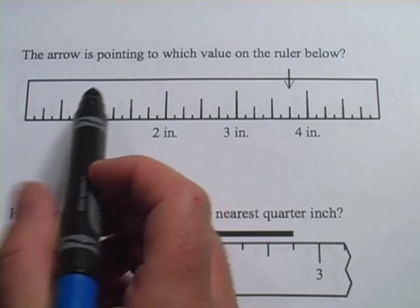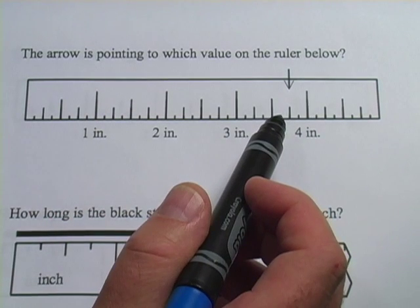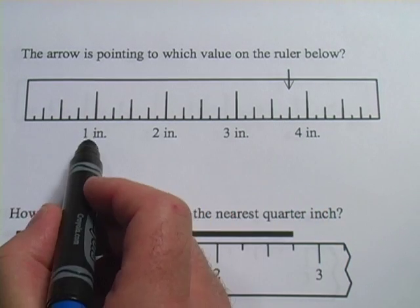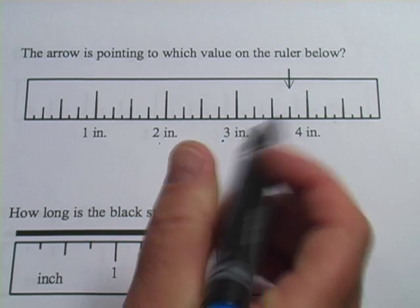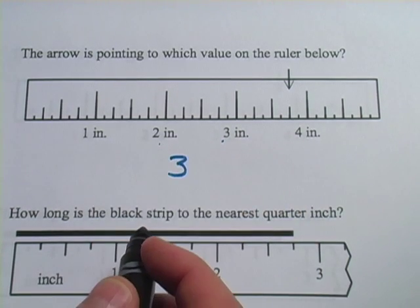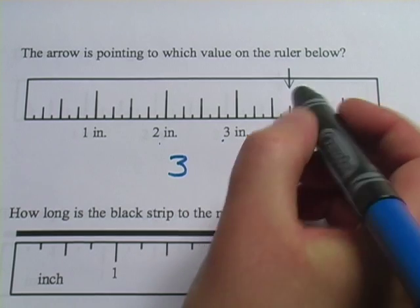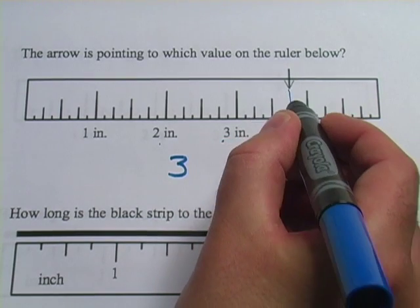This first one says the arrow is pointing to which value on the ruler below. So we've got one, two, three. It's somewhere between three and four inches. So it's going to be three and some fraction. Then I have to determine what mark it's pointing to. It looks like it's this one right here.